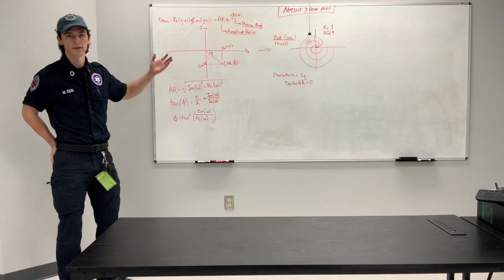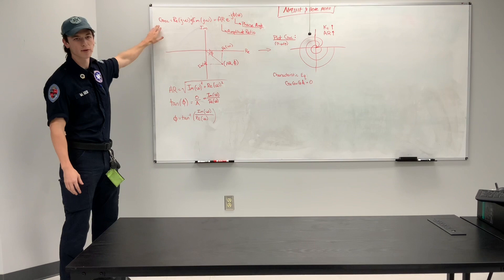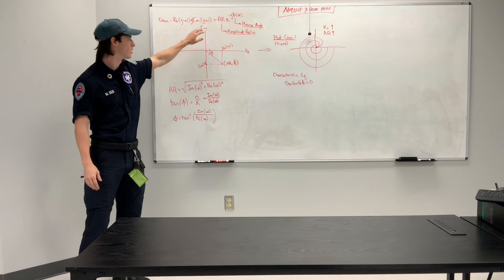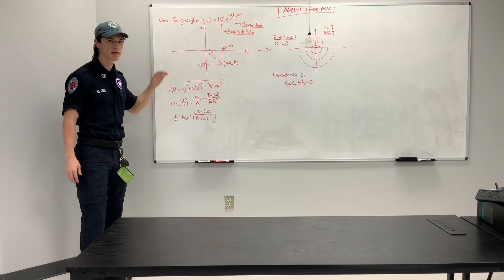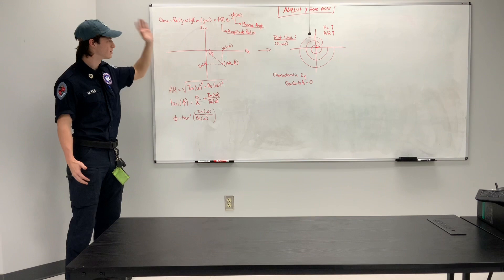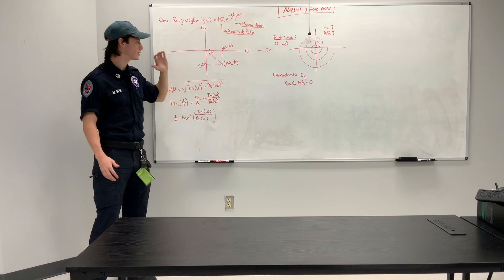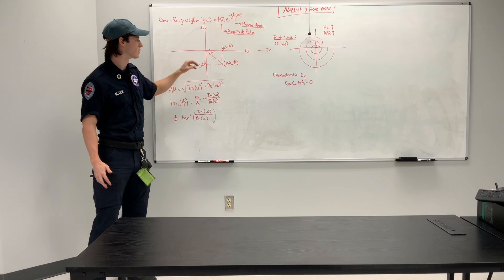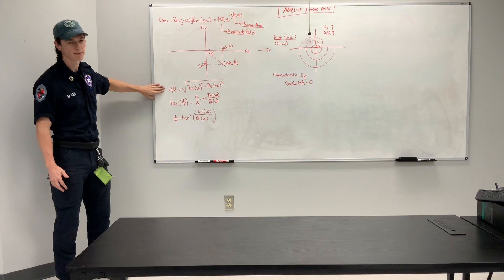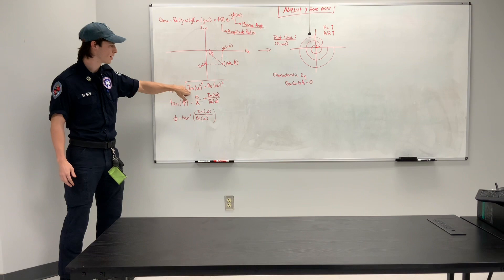So continuing with our discussion about the Nyquist plots, this is done in polar coordinates. We're going with the equation that we were left off with from Andrew, where the open loop transfer function equals the real portion plus the imaginary portion times j, which equals the amplitude ratio times e to negative j times the phase angle of omega. Now if you plot it in polar coordinates, with the real portion being on the x-axis and the imaginary portion being on the y-axis, any given point in this grid is going to have two parameters, the amplitude ratio and the phase angle. If we apply the Pythagorean theorem, this is how the amplitude ratio is solved.